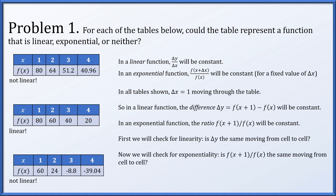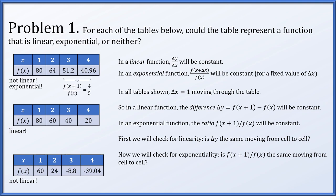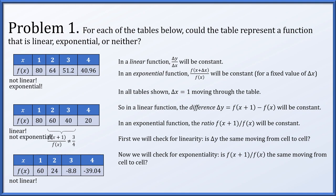Now to check for exponentiality, we compute the ratio f(x+1) divided by f(x) moving from cell to cell. In the first table, we get a ratio of 4/5, then 4/5 again, and 40.96 divided by 51.2 is exactly 4/5. So the ratio is constant — this is an exponential function. In the second table, 60 divided by 80 is 3/4, whereas 40 divided by 60 is not, so this is not exponential. In the last table, 24 over 60 is 2/5, but the next ratio involves a negative number over a positive one, so the ratio is not 2/5 — not an exponential function.